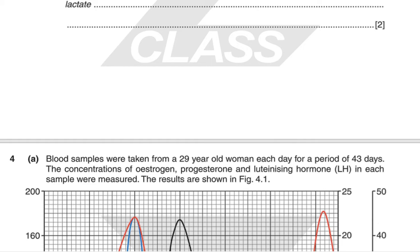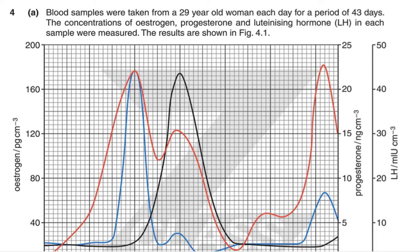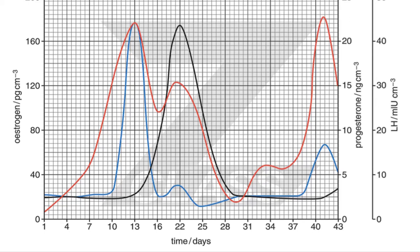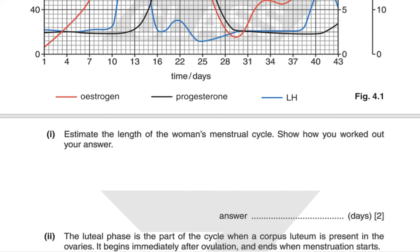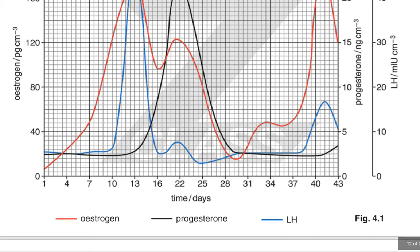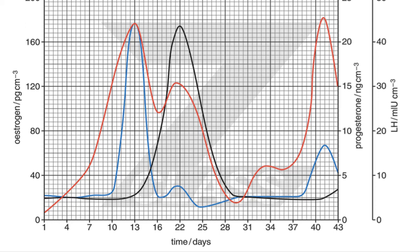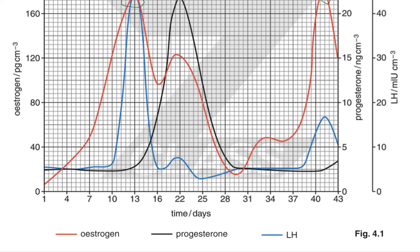Blood samples were taken from a 29-year-old woman each day for 43 days. The concentrations of oestrogen, progesterone and luteinizing hormone were measured. The red line is oestrogen, the black line is progesterone, and the blue line is luteinizing hormone. To estimate the length of the menstrual cycle, the easiest way is to look at the two peaks and measure the distance between them. Using the two oestrogen peaks — one on day 13 and the second around day 41 — the difference gives the length of the cycle: approximately 28 days.